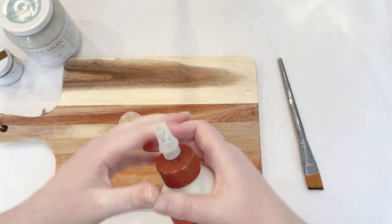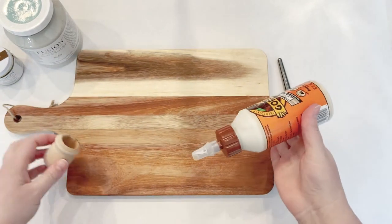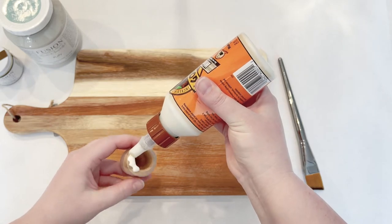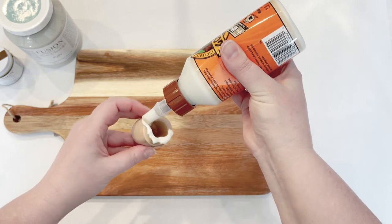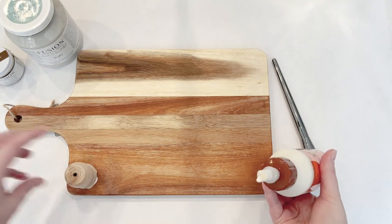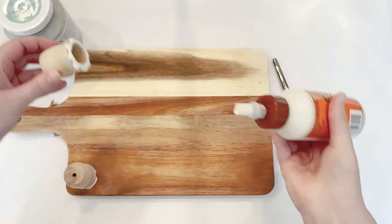The first thing we're going to want to do is glue on all of our little legs to create the actual riser. I put a generous amount of this wood glue around the top part of the candle holder, and then I'm just going to set it down on the cutting board.